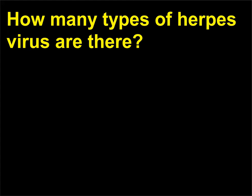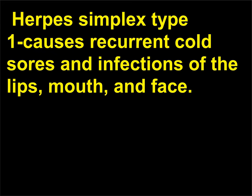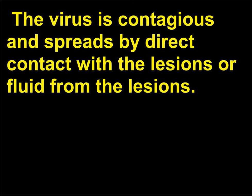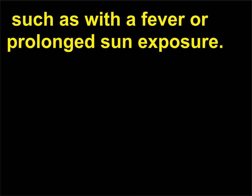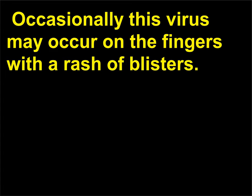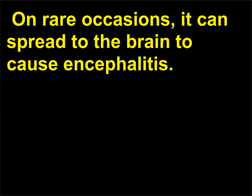How many types of herpes virus are there? There are 5 human herpes viruses. Herpes simplex type 1 causes recurrent cold sores and infections of the lips, mouth, and face. The virus is contagious and spreads by direct contact with the lesions or fluid from the lesions. Cold sores are usually recurrent at the same sites and occur where there is an elevated temperature at the affected site, such as with a fever or prolonged sun exposure. Occasionally this virus may occur on the fingers with a rash of blisters. If the virus gets into the eye, it could cause conjunctivitis or even a corneal ulcer. On rare occasions, it can spread to the brain to cause encephalitis.